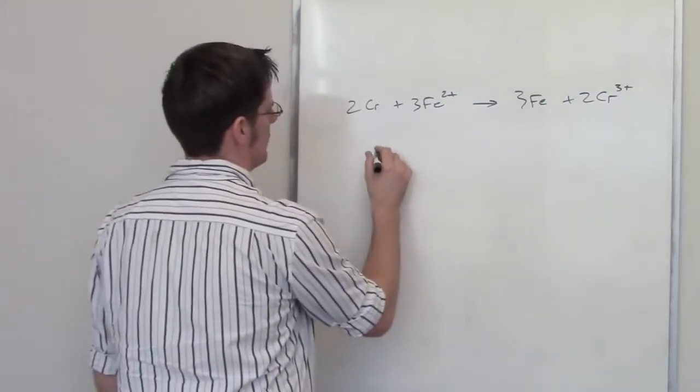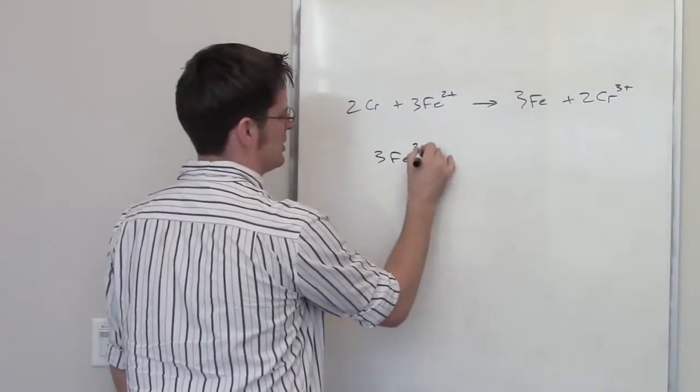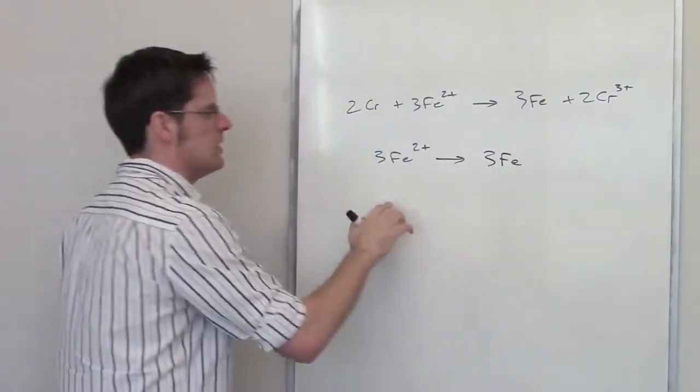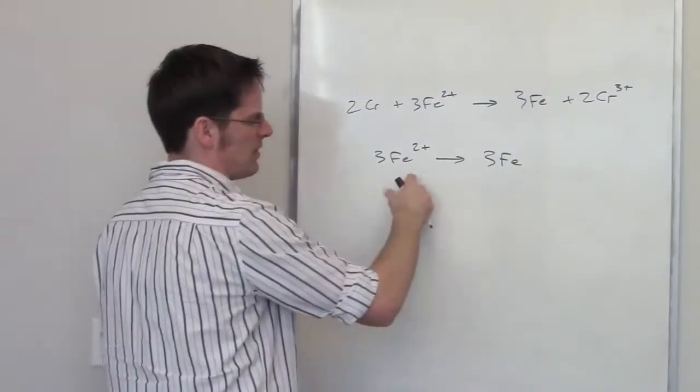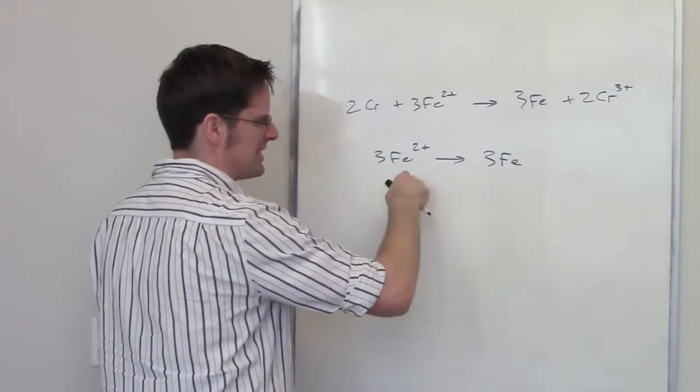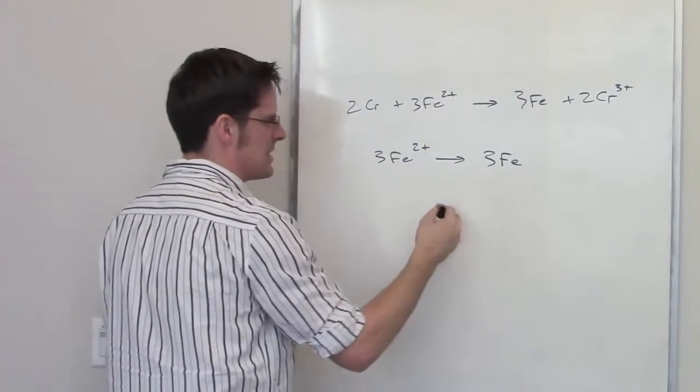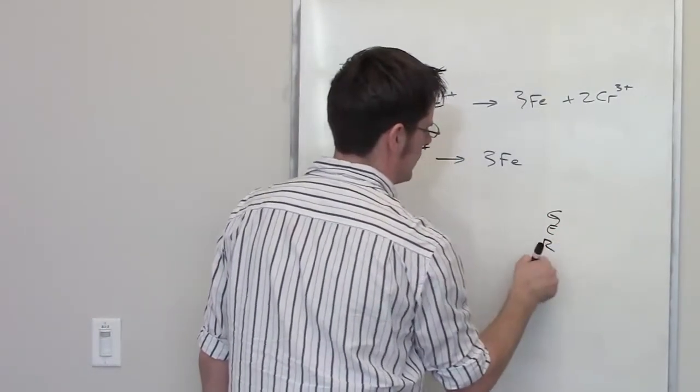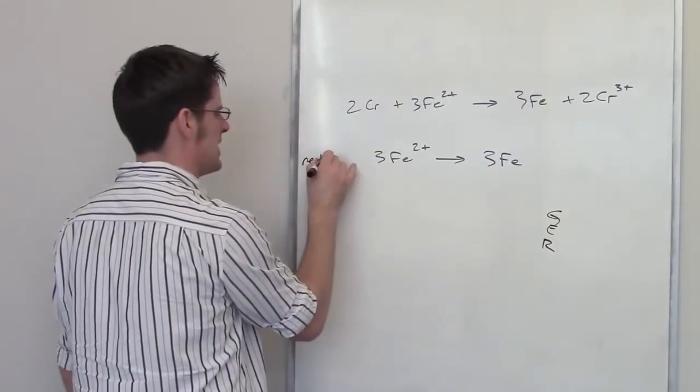Let's go ahead and throw this thing down. So I've got three irons, and each of them has a 2+ charge being converted into three irons that have a zero charge. How do I do that? Well, this iron's going from being positive to being zero, which means it's becoming more and more negative, which means it's gaining electrons. So if I gain electrons, that's reduction. So this is my reduction step.